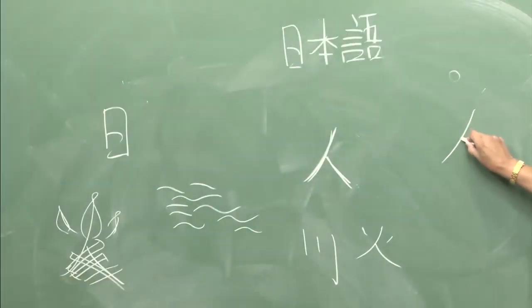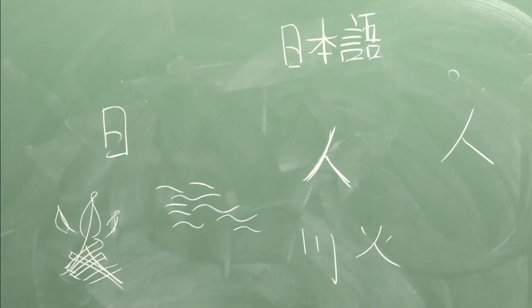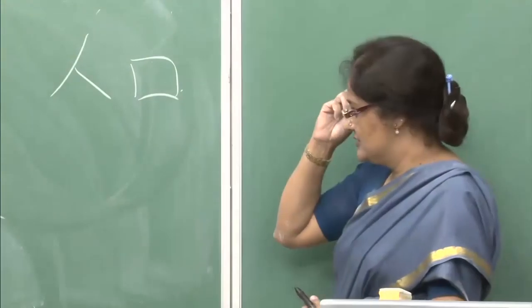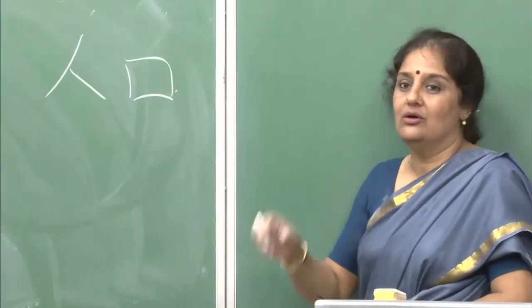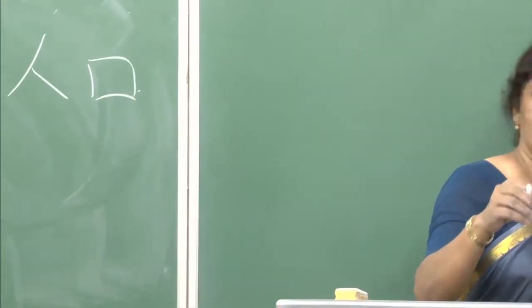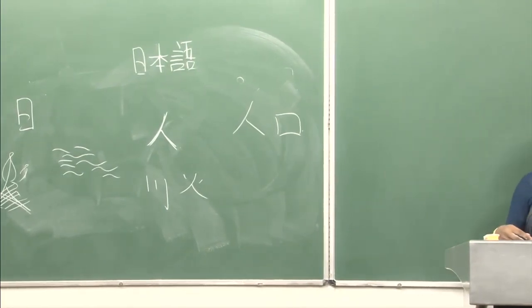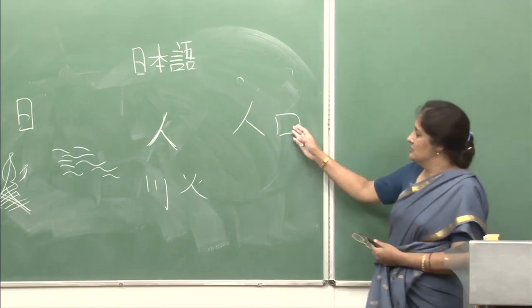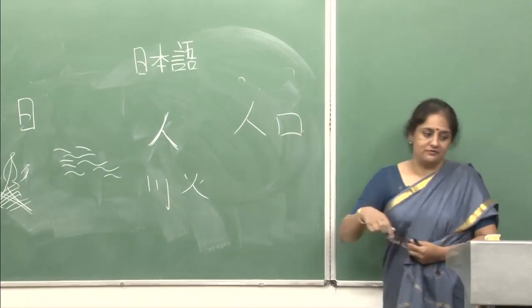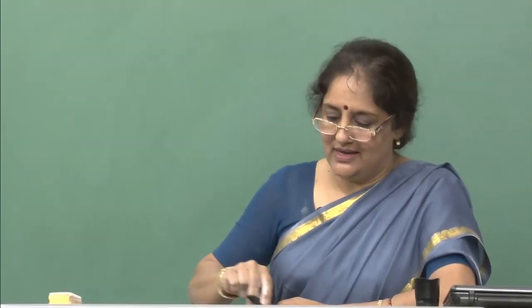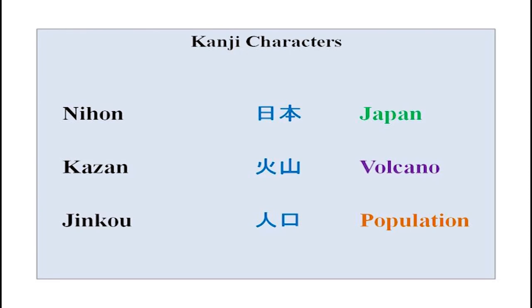This character is 'hito' — man. This other character looks like a mouth, an opening. If you join these two characters it means population — so many people, so many mouths to feed, and that is population. That is how you would think of kanji characters.